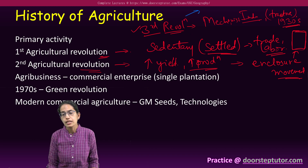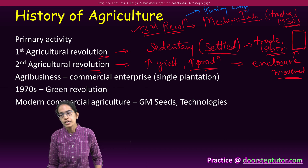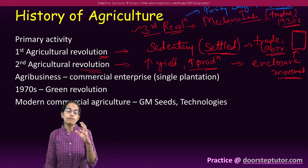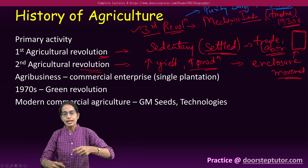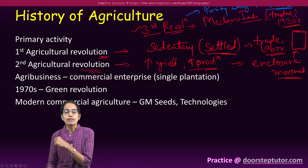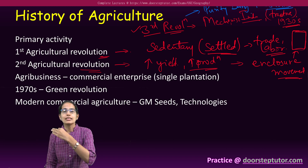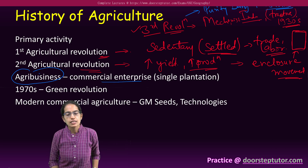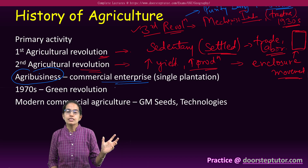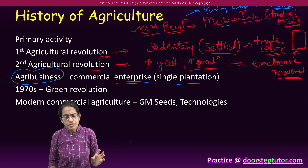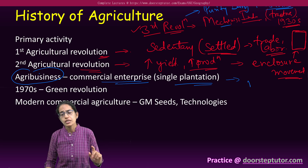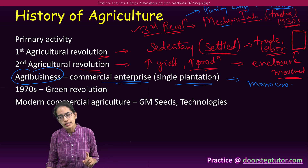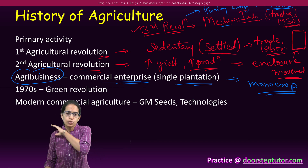A classic example of the third revolution is Purity Dairies, an important dairy in the Nashville region of the United States. This dairy collects raw milk, takes it to a factory in Nashville for processing, and then supplies the processed material — developing as an agribusiness, meaning a commercial enterprise. Agribusiness also extended to single plantation or monocropping, where only one crop is grown as a plantation.